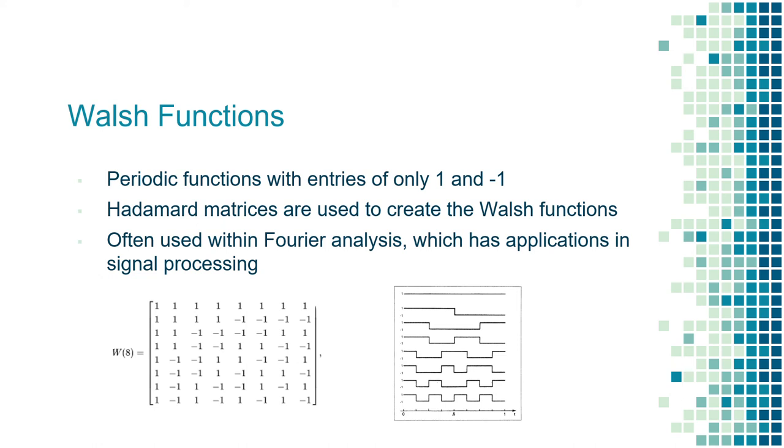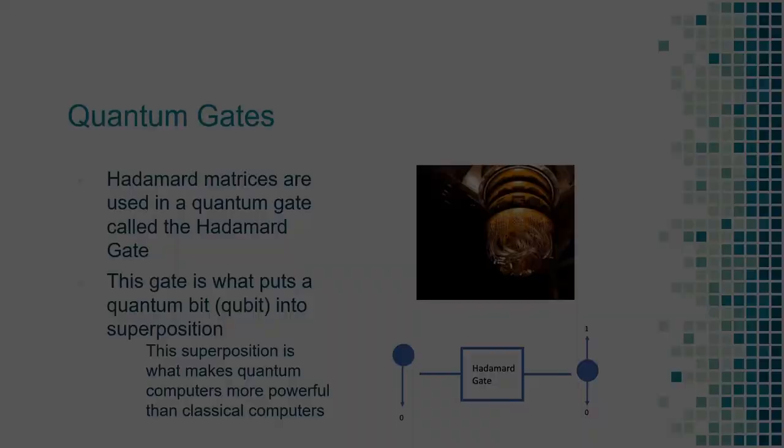The thing that Walsh functions are useful for are Fourier analyses, which is used in signal processing. In today's world, this is obviously extremely important, since all of the electronic devices we use connect to each other using signals. So it is vital that signals can be processed and interpreted correctly, which ensures that information is correctly sent between devices.